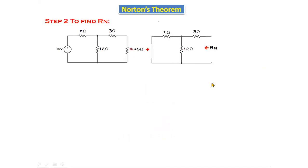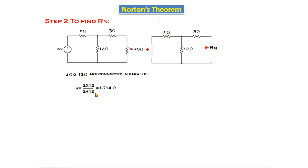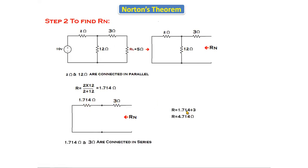Now let's find Norton's resistance. Short circuit the voltage source and open circuit the load resistance. Looking into the two terminals: the 2Ω and 12Ω resistors are in parallel — 2×12 / (2+12) = 1.714Ω. This 1.714Ω is then in series with the 3Ω resistor: 1.714 + 3 = 4.714Ω. So Norton's resistance R_N = 4.714Ω.